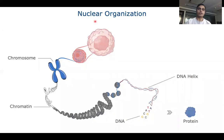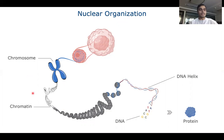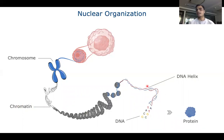So, nuclear organization. Here we have a cell with a Nucleus, and in the Nucleus the nucleic acids are usually present in the form of threads, but at a particular stage they are present in a very compact form called a chromosome. A chromosome is made up of a relatively less compact form of this thread called chromatin, and chromatin is made up of DNA helixes, which are in turn made up of DNA molecules.